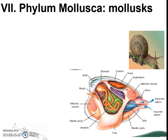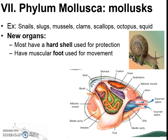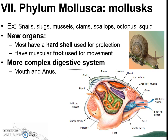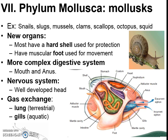Moving on to mollusks — things like snails, slugs, mussels, clams, scallops, octopus, and squid. Many of them have cool new organs like a hard shell for protection. The muscular system is improving, creating a specialized structure called a foot which aids movement, especially on land. They have an even more complex digestive system with more specialized mouth and anus, and an even more specialized nervous system. Now we're also getting really specialized gas exchange with different organs — basic lungs or basic gills depending on whether they're on water or on land.